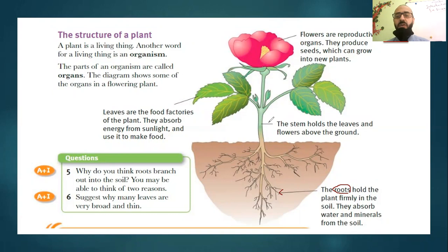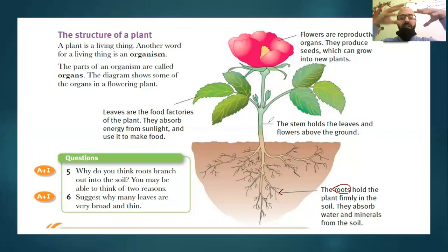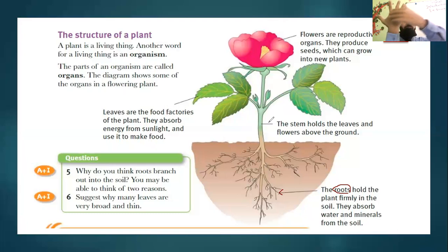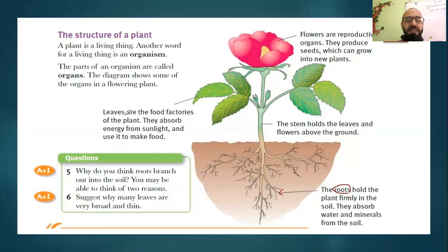The second part is the stem. The stem supports the plant and holds the leaves and flowers above the ground. It can hold leaves and flowers on both sides, and sometimes it can also store food for the plant. Number three, leaves — the leaves are the food factories of the plant. They absorb energy from sunlight and use it to make food.